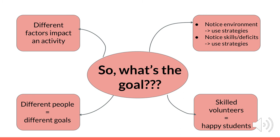We'd like you to recognize how the environment is either helping or is a barrier to the student, and act accordingly using your knowledge of strategies — like moving to a less distracting environment. It's also about an awareness of physical, cognitive, visual, and language skills and deficits, and again, acting with your knowledge of strategies, like using gestures and demonstration for someone who may have difficulty understanding speech.